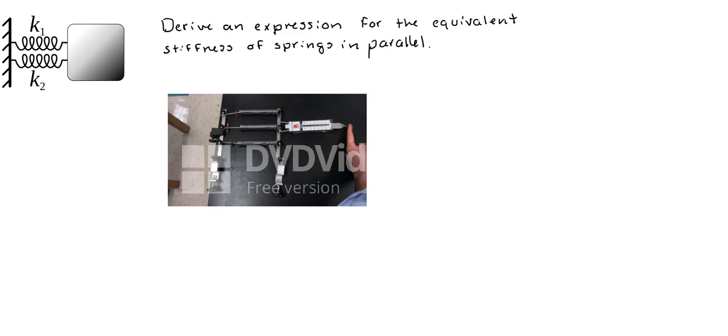In this video we're going to derive an expression for the equivalent stiffness of springs that are attached in parallel. The way that we're going to do this is that we're going to imagine that we're going to move the block in the x-direction, if we put a coordinate system here.